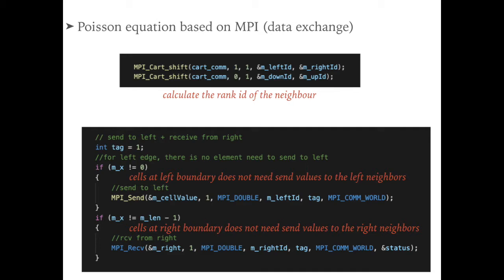After this, let's see how to update the ghost values, namely the variables to store the neighbor values. For this example, we show how the current rank send values to the left positions and receive values from the right positions, namely the right cells.